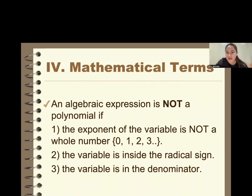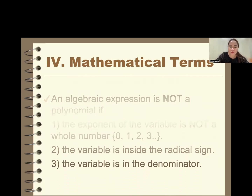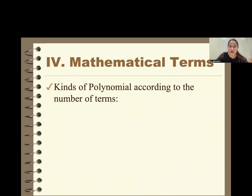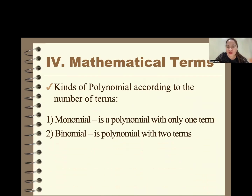The kinds of polynomial according to the number of terms are: one term is a monomial, two terms is a binomial, three terms is a trinomial, and four or more terms is called a multinomial.